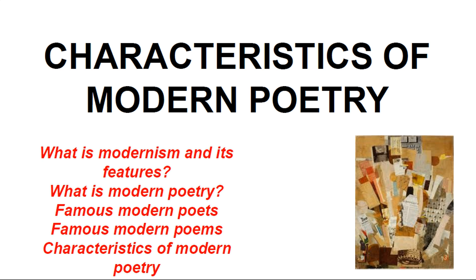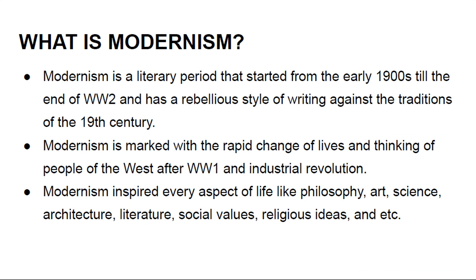Starting with the definition of modernism — what is modernism? Modernism is a literary period that started from the early 1900s till the end of World War II and has a rebellious style of writing against the traditions of the 19th century. Modernism is marked with the rapid change of lives and thinking of people of the West after World War I and the Industrial Revolution.